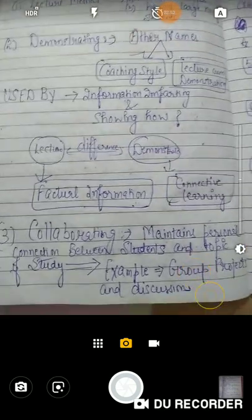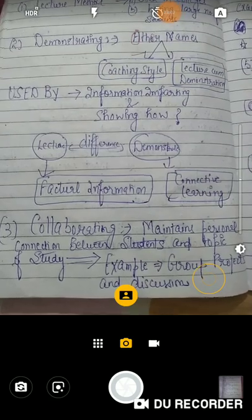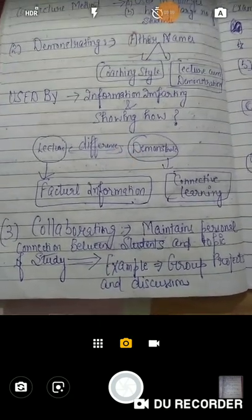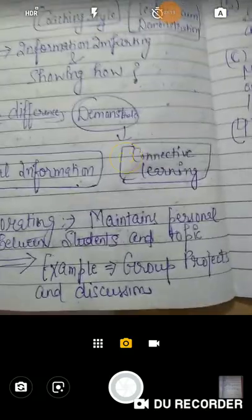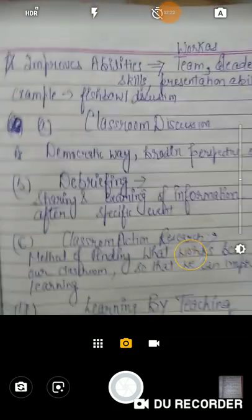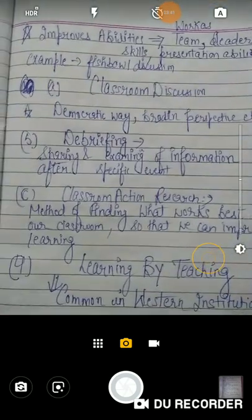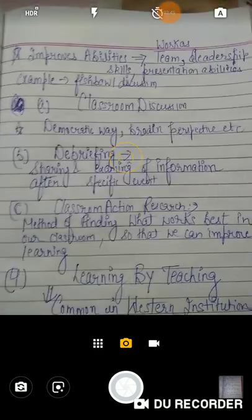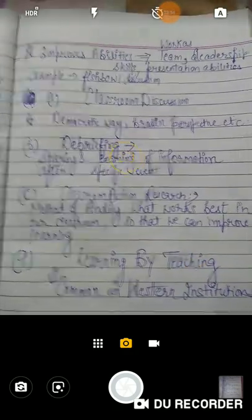Then guys the next point is collaborating। Collaboration का मतलब clear है — सब मिलकर काम कर रहे हैं। So it maintains the connection between students and topic of study. जब भी word collaborating आएगा, तो आप बोलेंगे कि student और topic का connection बना रहे हैं। Example — group projects या discussion method। इससे आपकी abilities improve होती हैं, team में work करना आता है, leadership qualities बढ़ती हैं, presentation abilities बढ़ती हैं। Collaborating का example है fishball discussion, जिसमें chairs लगाई होती हैं — एक internal side, एक external — और उस तरीके से discussion होती है।